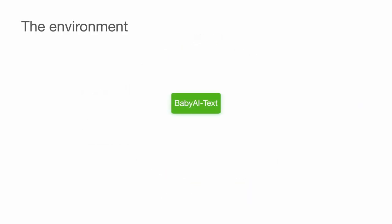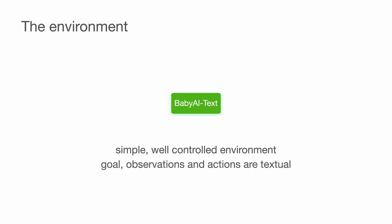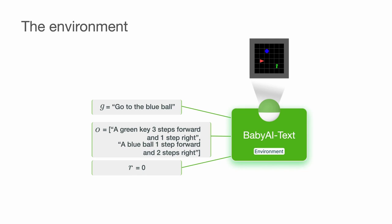There are many open questions to understand better how such functional grounding works. We believe one needs to start by making systematic experiments in simple, well-controlled environments. Thus, we conduct our experiments with BabyAI Text, a textual grid world in which the agent navigates to achieve different goals.